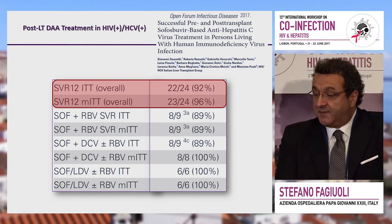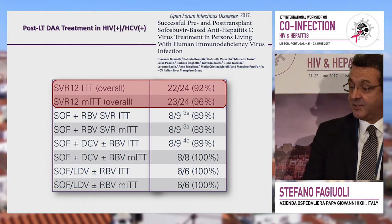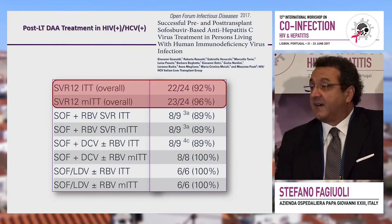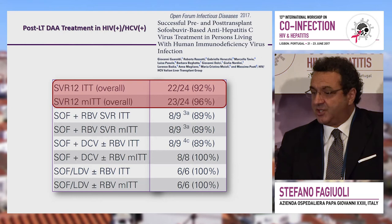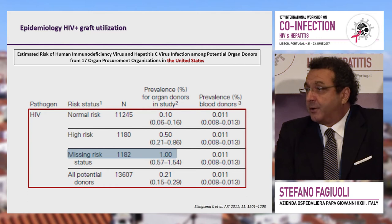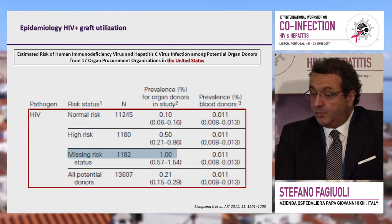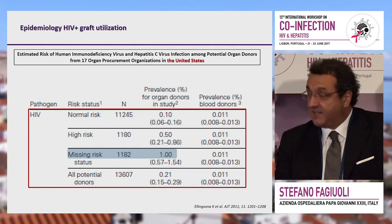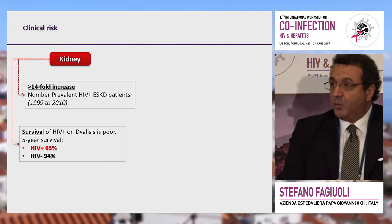A short series from Italian centers including Milan showed 96% modified intention-to-treat survival with various DAA combinations, successfully changing the natural history of recurrence for these patients. Regarding epidemiology, approximately 0.21% of all donors will be HIV positive — not very many — but this can go up to 0.5% among high-risk donors, and that is the population we should focus on.